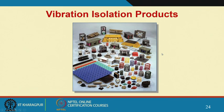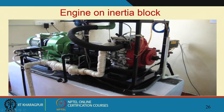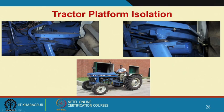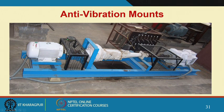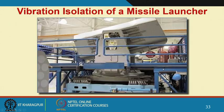Various isolation products are available: inertia blocks to reduce transmitted vibration, isolators for back-hoe loaders and tractors, gas turbine isolators to prevent large rocking motions, and cable mounts used in missile launchers.